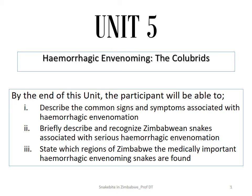Hi, welcome back again. This is Unit 5. You're making very good, steady progress. Well done. So in Unit 5, we're going to be looking at hemorrhagic, sometimes known as hemotoxic, envenoming or envenomation, and we've titled it hemorrhagic envenoming: the colubrids.